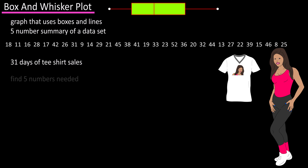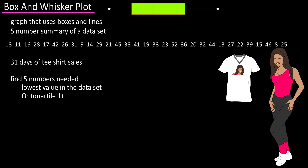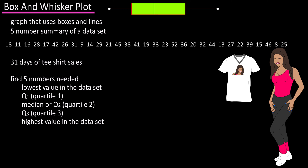The first thing we need to do is find the five numbers that define the box and whisker plot: the lowest value in the data set; Q1, or quartile one, which is the 25th percentile; the median, which is also Q2, the 50th percentile; Q3, or quartile three, which is the 75th percentile; and the highest value in the data set.